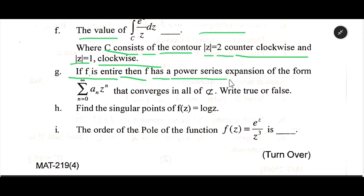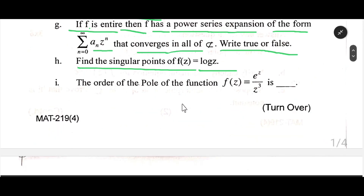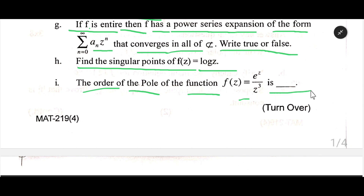If f is entire, then f has a power series expansion of the form summation n=0 to infinity of a_n z^n that converges in all of the complex plane. True or false. Find the singular point of f(z) = log(z). The order of the pole of the function f(z) = e^z / z^3 is dash.